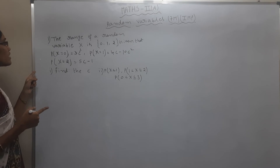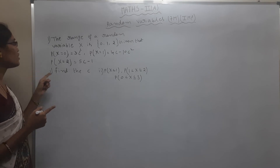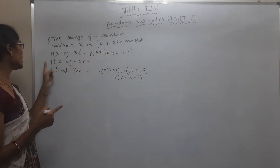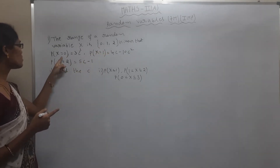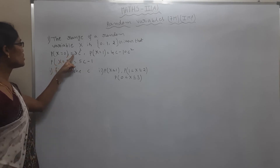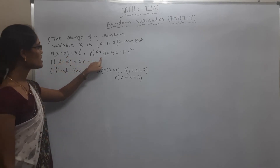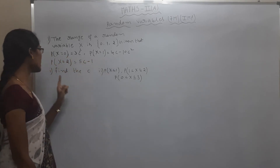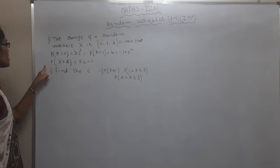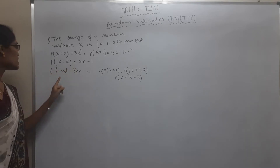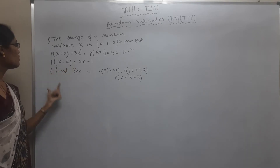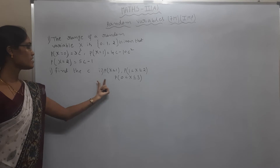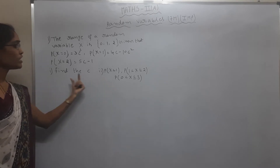First question: the range of random variable X is {0, 1, 2}. Given that P(X=0) = 3c³, P(X=1) = 4c - 10c², and P(X=2) = 5c - 1. Find the value of c.